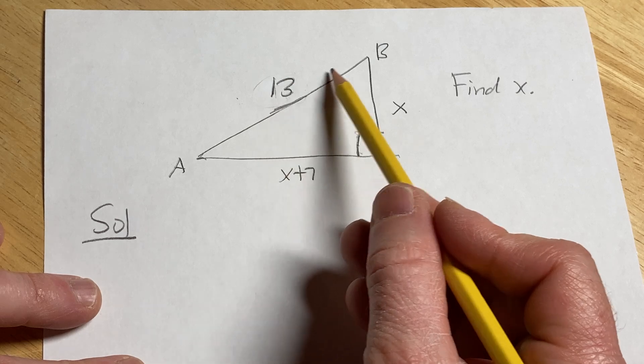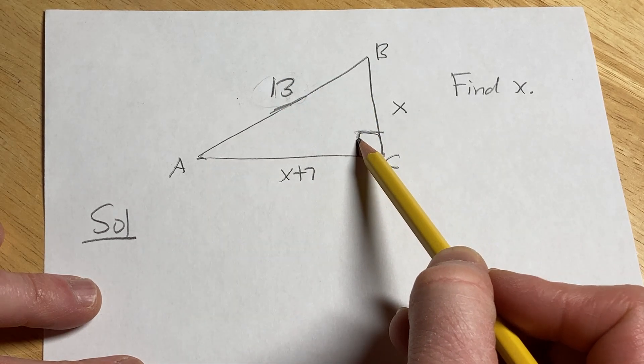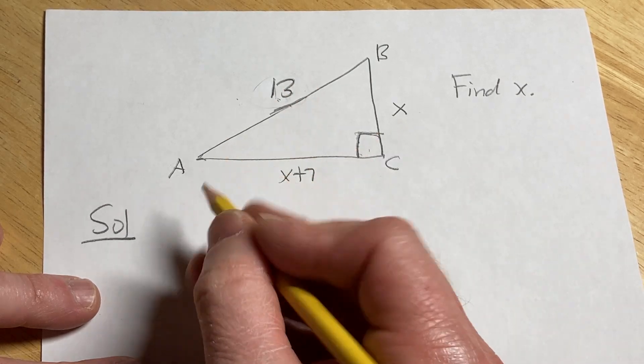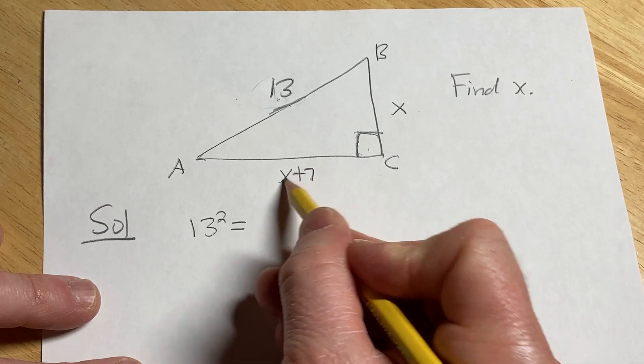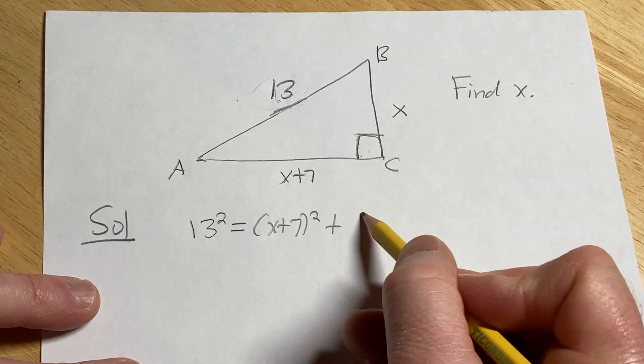So the hypotenuse is this side here, it's the one that's opposite the 90 degree angle. The Pythagorean Theorem says that the hypotenuse squared, which in this case is 13 squared, is equal to x plus 7 squared plus x squared.